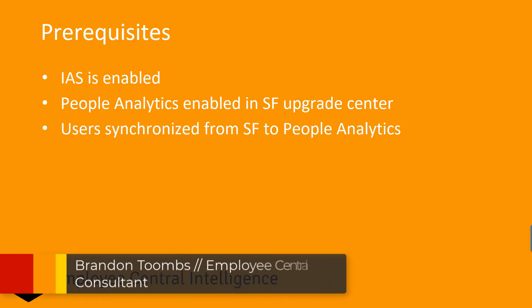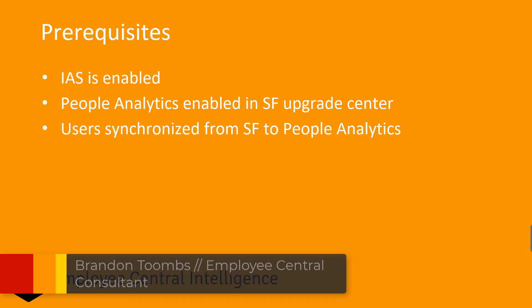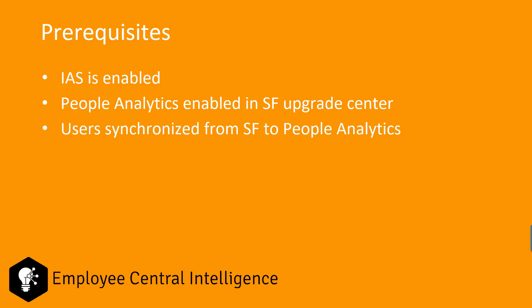I'm assuming you're probably pretty well versed on what people analytics are and what they're for. But one thing I want to point out before we take a deep dive into getting the template stories up and running is the prerequisites. First, we need to have IAS — the Identity Authentication Service from SuccessFactors — enabled. That is the front door, and getting that in place is half the battle. Then the next two steps are pretty straightforward: enable people analytics within Upgrade Center, and synchronize your users from SuccessFactors to people analytics. These prerequisites need to be met before you even think about trying to get the template stories up and running.